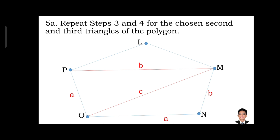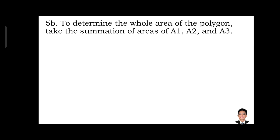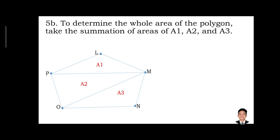Step 5a: repeat steps 3 and 4 for the chosen second and third triangles of the polygon. Step 5b: to determine the whole area of the polygon, take the summation of the areas of A1, A2, and A3, where the total area equals area 1 plus area 2 plus area 3.